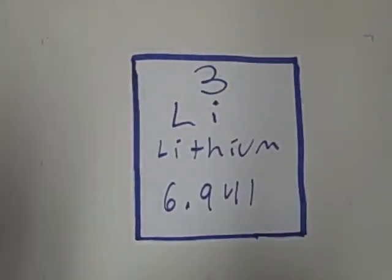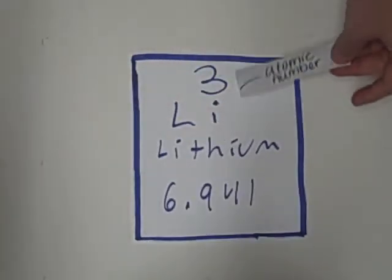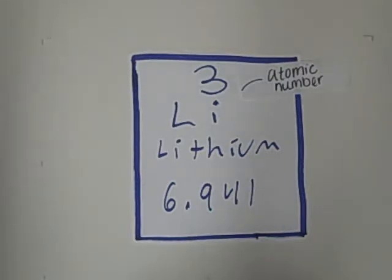Look at the number 3. That is the atomic number, and it tells you the number of protons and electrons. The number 6.941 is the atomic mass. It tells you the number of protons and neutrons.